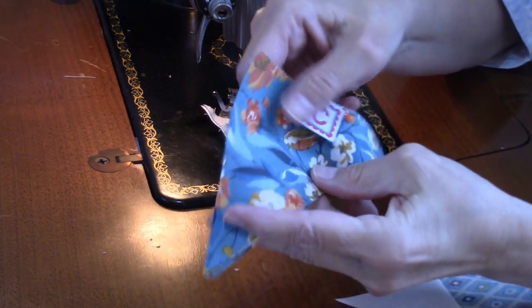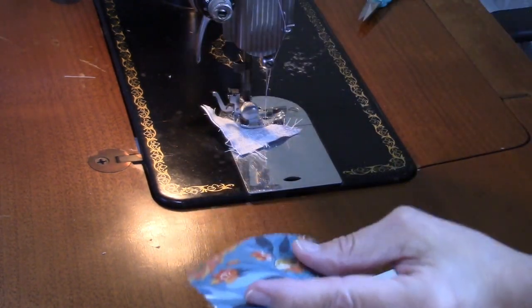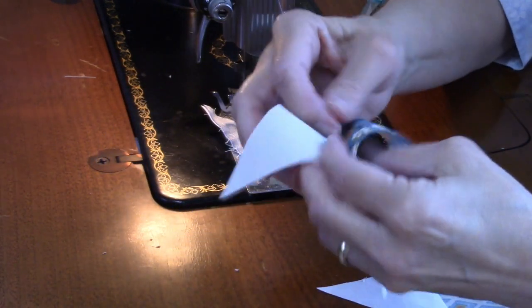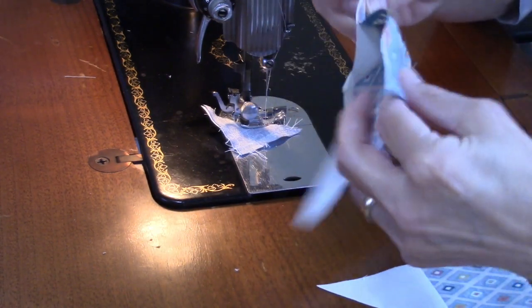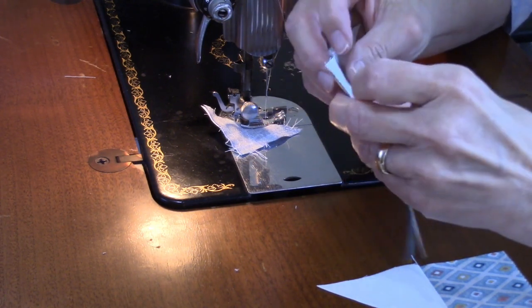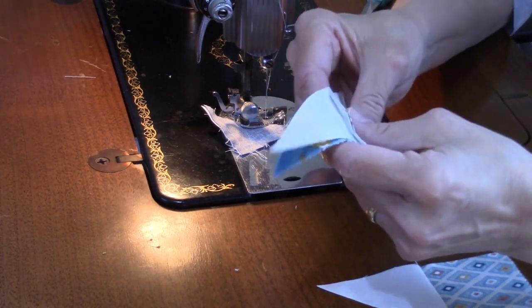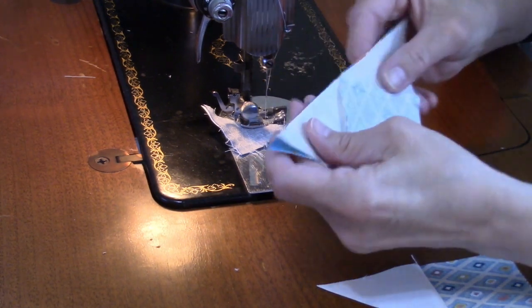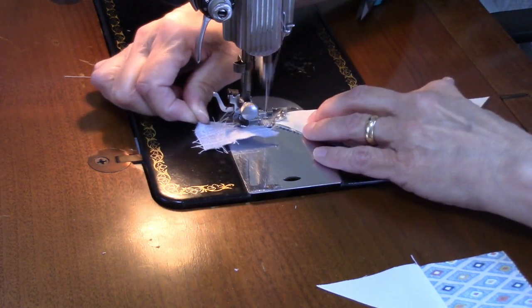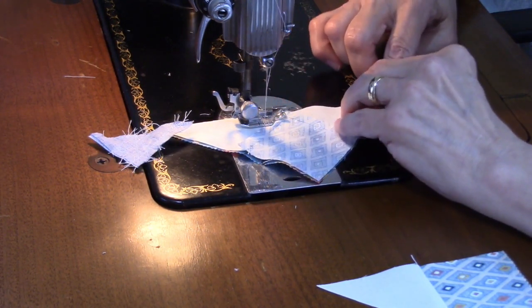Now I need to sew C triangles onto these corner units. These fabrics aren't directional, so I don't need to worry about that. Just put them right sides together. I'm going to sew on that long edge. These also will need to be trimmed down just a little bit, so I'm going to go ahead and sew on that seam, keeping my raw edges even.